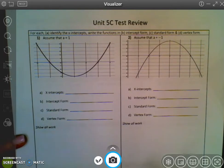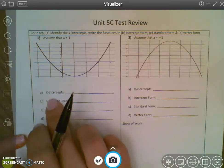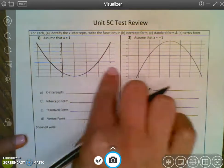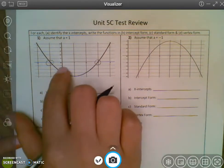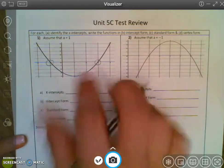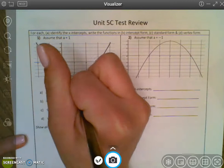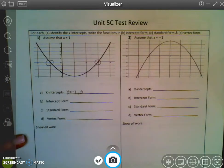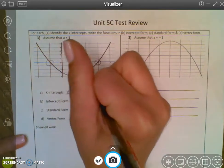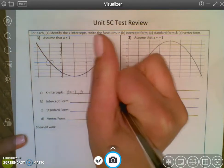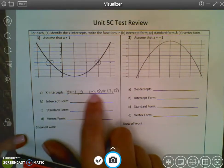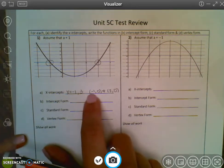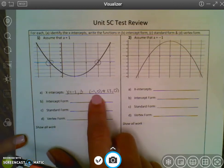So on number 1, for each identify the x-intercepts, write the functions in intercept form, standard form, and vertex form. First it wants the x-intercepts, so that's where it crosses the x-axis, which is right here. So here's 1, and here's 1. This is at negative 1 and 3. So you can see it as either x equals negative 1, 3, or you can see it as negative 1, 0 and 3, 0. Make sure because they're the x-intercepts, these are x-y points, so the x is the one that gets the number, and then the y is 0.